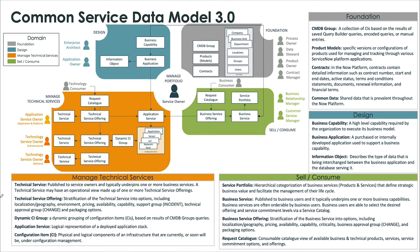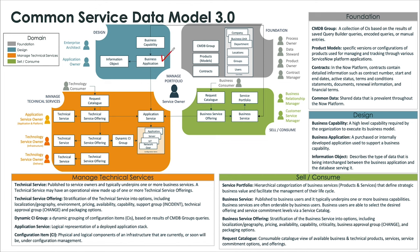This is the Common Service Data Model 3.0. I'm going to go through some of the main elements of the model and talk about how we typically implement it. What we typically see is that most organizations know the applications they have, though how they're managing them varies in terms of governance established. If you're using our APM product, that would actually help to manage what applications you even have and how you're managing them — what's the description of these apps and how they provide value to the business. We typically see this as a very good starting point for most organizations.